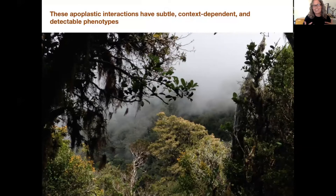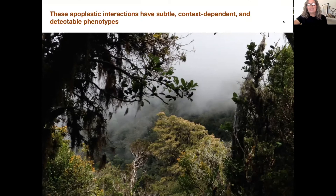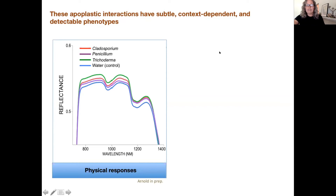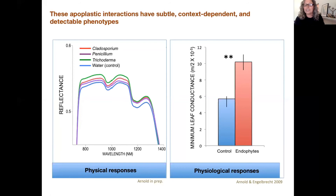One exciting new development is the ability to remotely sense endophytes in leaves. Some endophytes induce lignification, creating a sufficiently different signature of leaf structure that we can detect it by measuring leaf reflectance. In certain wavelengths, we can see distinctive signatures of endophytes being present in a leaf.